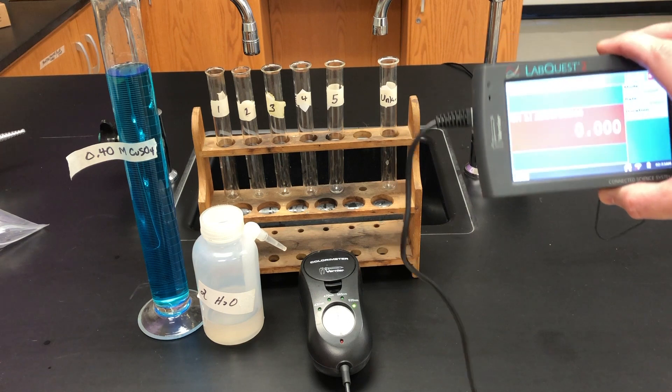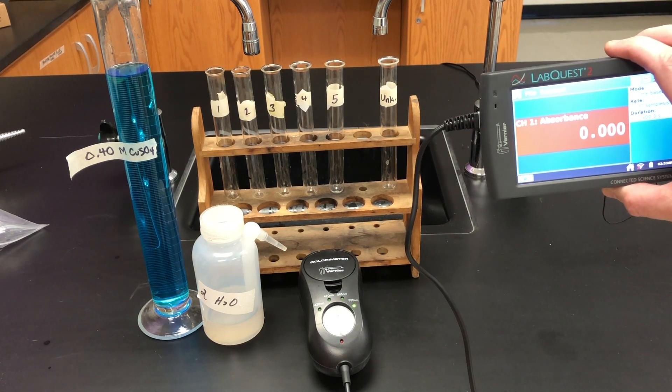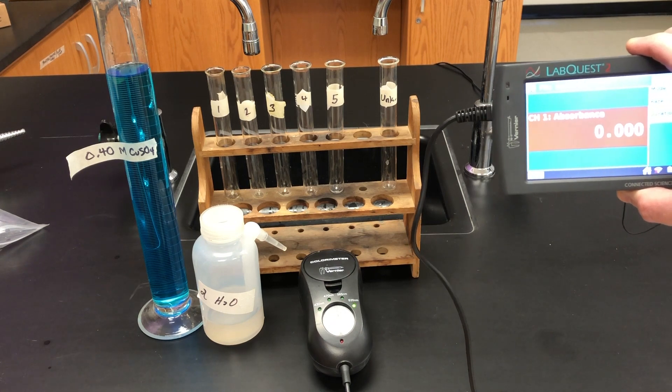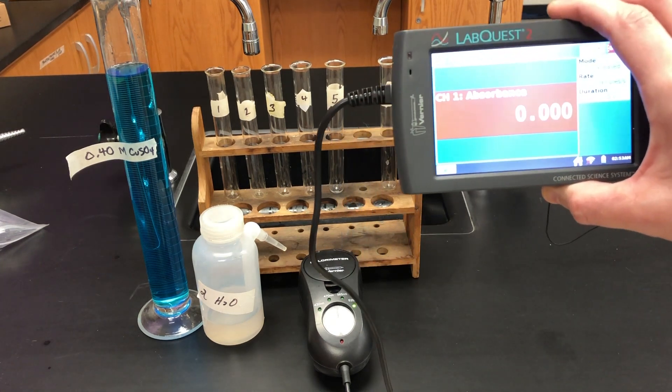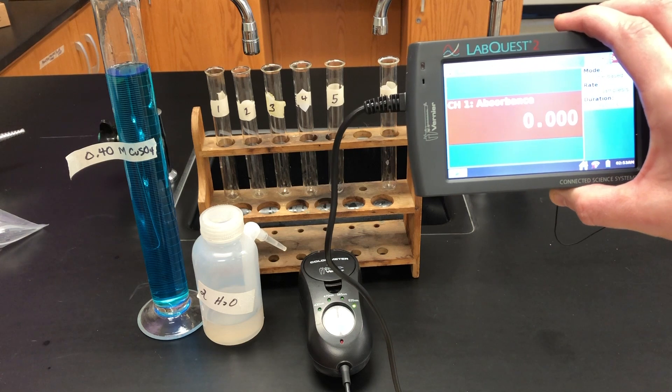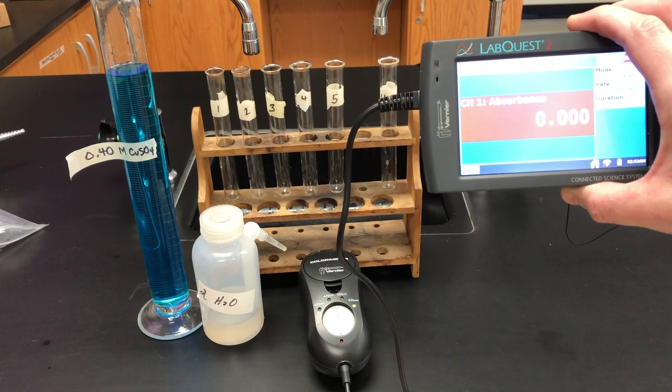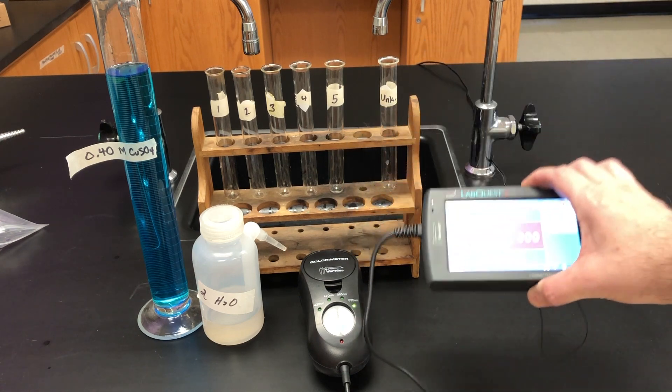The lab quest right now is reading zero, because right now all we have in it is water. You want to set it up that way so there's a baseline. Water is colorless, so it's not reading any absorbance whatsoever. All the light is passing through it, as you can see there. That's how we'll be looking at the display once we do subsequent measurements.